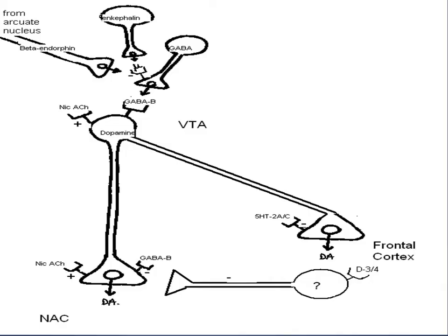This slide shows the dopaminergic neuron projections within the CNS — some go down to the nucleus accumbens, others to the frontal cortex. Different pathways have inhibitory and excitatory effects. If there's too much dopamine activity firing from a particular neuron, more dopamine is released at the synapse, and that leads to some of the positive symptoms.